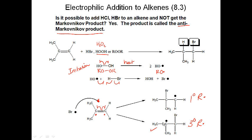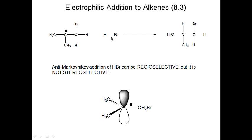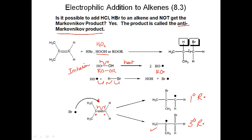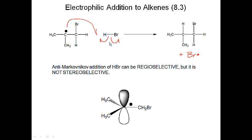Which radical do you form faster? The tertiary radical — because it's the more stable intermediate (Hammond's postulate). So the bromine has added to the carbon with the most hydrogens to generate the most stable radical. This is no longer a carbocation-based mechanism; this is free radical. Then the tertiary radical reacts with another HBr molecule.